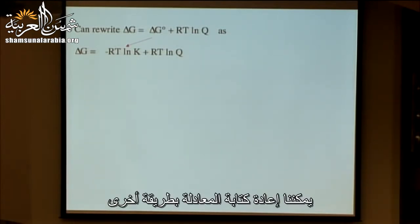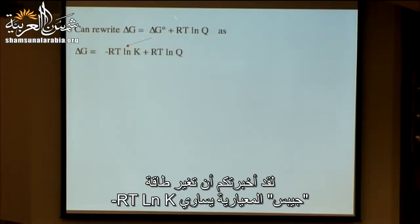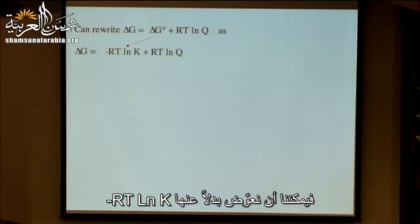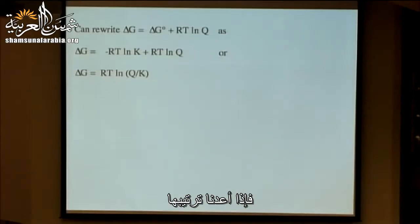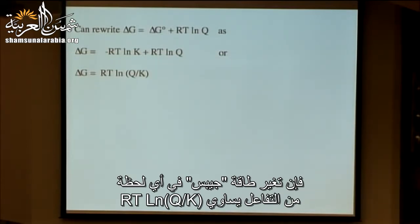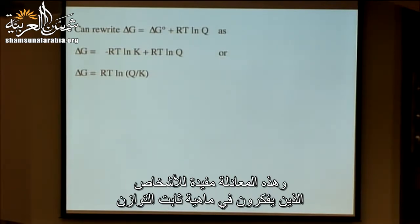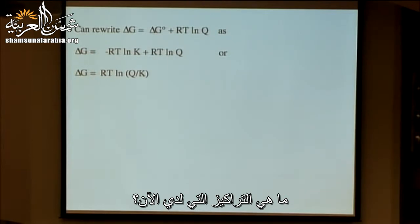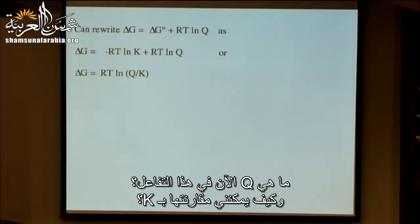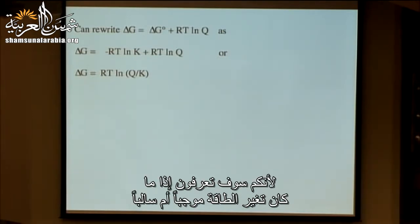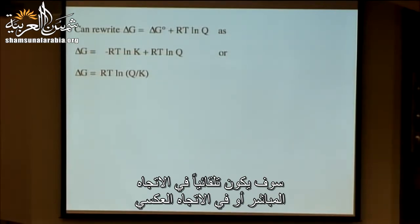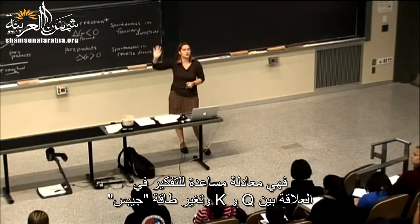We can rewrite the equation one more way. Since delta G° = −RT ln K, we can substitute to get: delta G = RT ln(Q/K). This equation is helpful when thinking about the equilibrium constant and what concentrations you have now — are you at equilibrium? What is Q now compared to K? When you know those values, you know the direction the reaction will go, because you'll know if delta G is positive or negative.